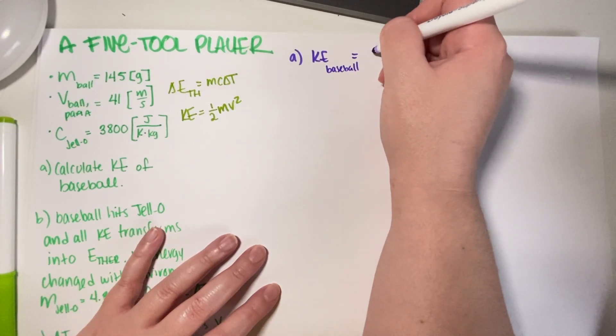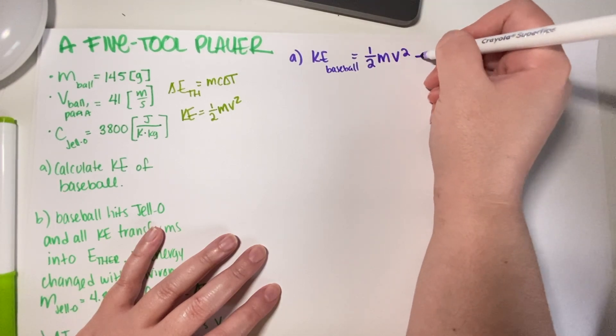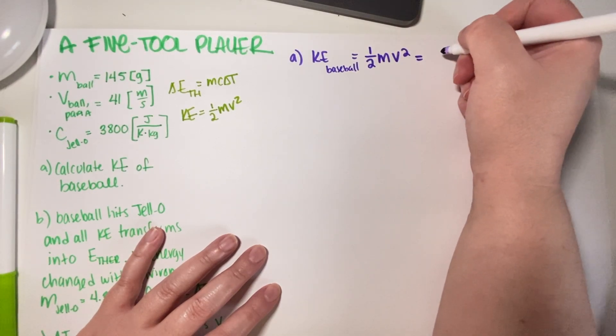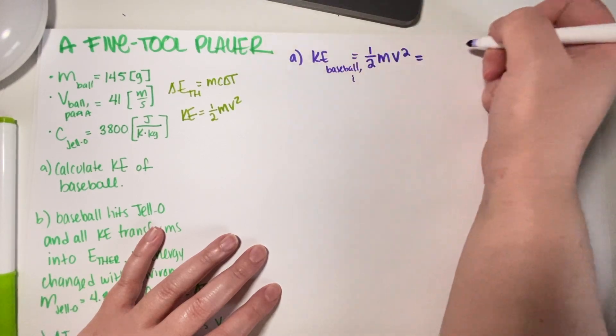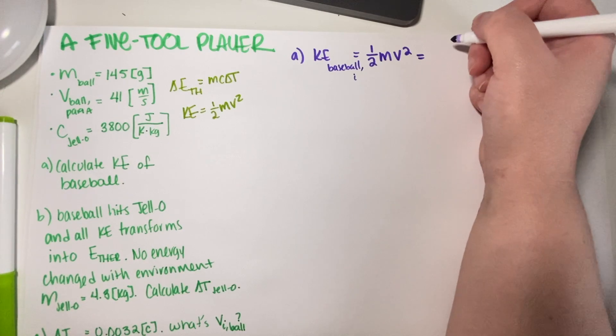So Part A is kinetic energy of the baseball equals one-half mass baseball times v squared. Let's call it v_initial just to have it set up for Part B.